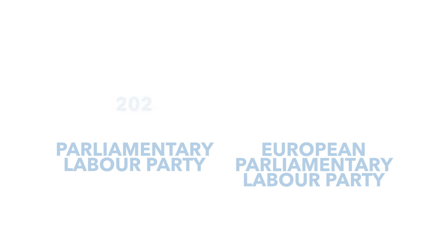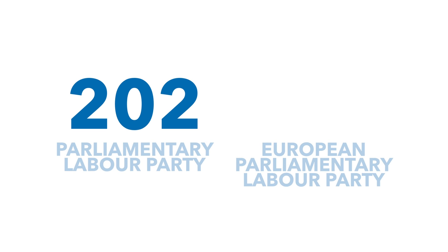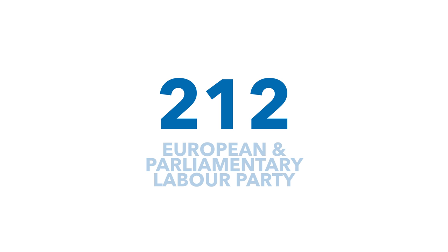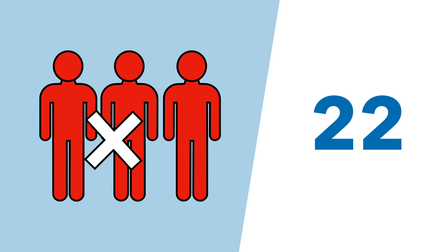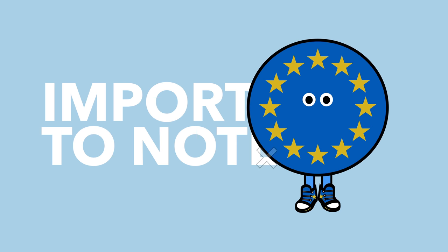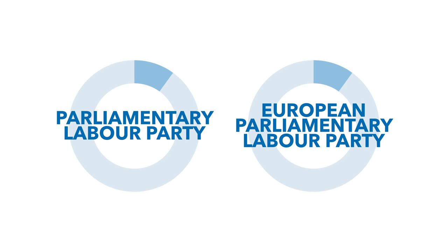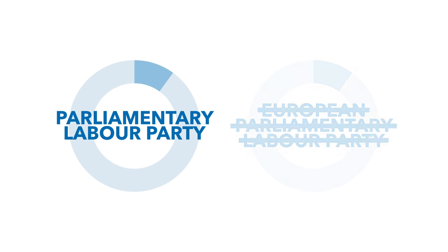As Labour currently have 202 MPs in the Commons and 10 MEPs in the European Parliament, each contender needs the support of 10% of the 212 Labour representatives, which amounts to a total of 22 backers. If a contender fails to reach this threshold, they do not proceed to the next round. It's important to note that if the UK does leave the EU before the next election, candidates will need the support of 10% of Labour MPs only.